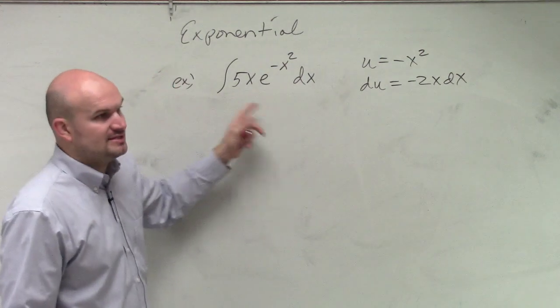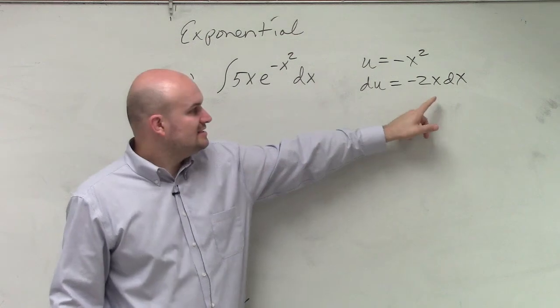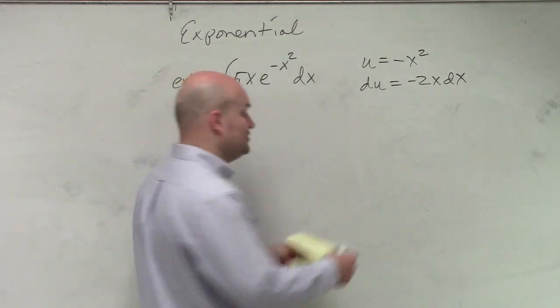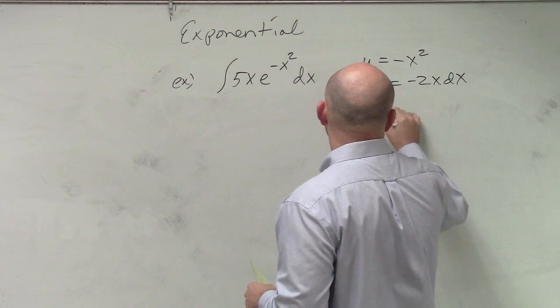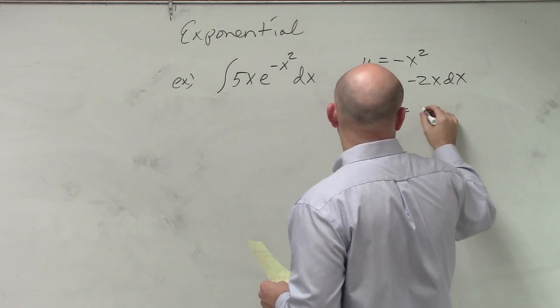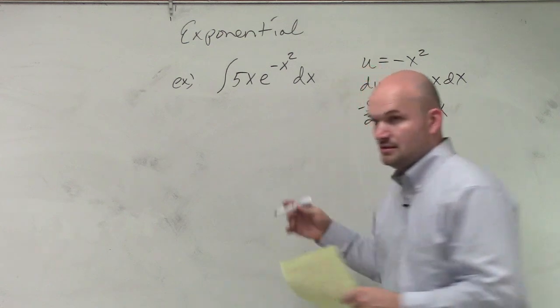So we need to be able to see, well, what should I multiply by then to give me a negative 5x? Now, there's a couple ways you could do that. You could rewrite this as a negative 5 halves du equals x dx. You guys agree with that?